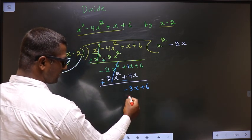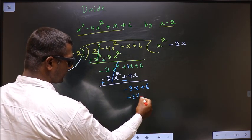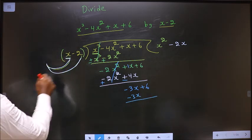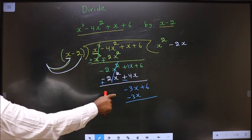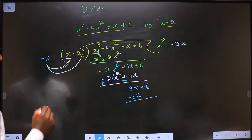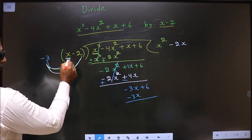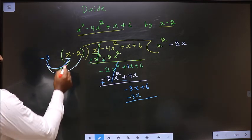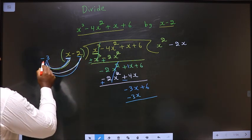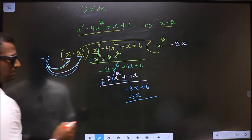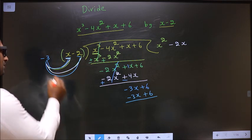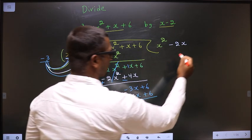Here you have minus 3x. Below this also you should get minus 3x only. Here you have x. To get minus 3x, you should multiply this with minus 3. Minus 3 into x is minus 3x. When you are multiplying to this, you should also multiply to this. So minus 3 into minus 2 is plus 6. The next term of your quotient is minus 3.